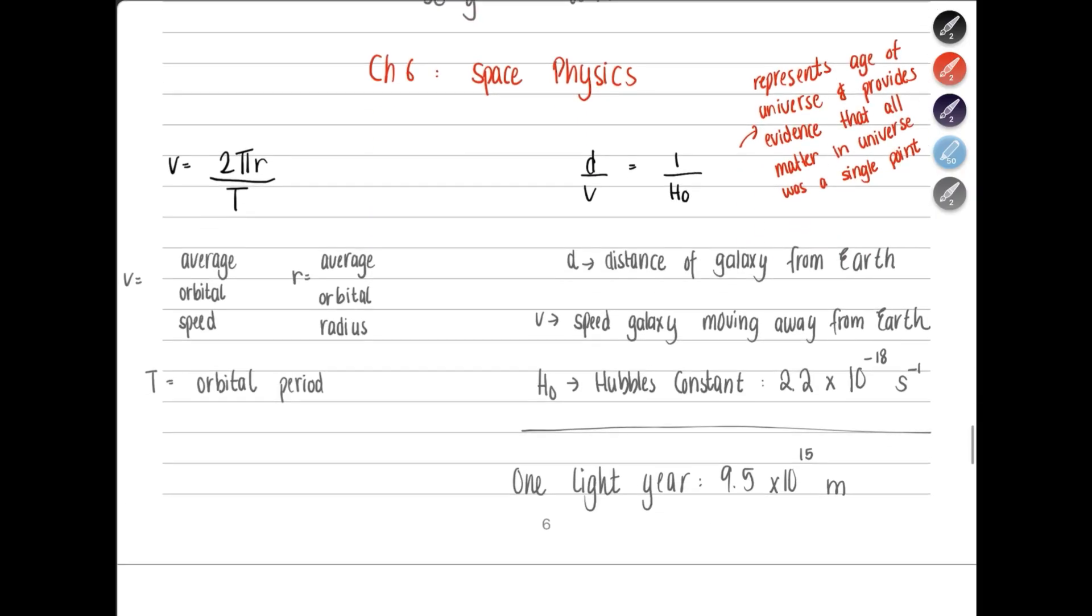Now, let's move on to space physics. These are two important formulas that you need to know. V is the average orbital speed. The speed to move around the entire orbit. The formula is 2 pi r. r is the average orbital radius. The radius of the orbit, divided by t, orbital period. The time taken to travel the entire orbit. V equals 2 pi r divided by t. On the other side, you have d by v equals 1 over h naught. What is d? d is the distance of the galaxy from Earth, from any galaxy that you're measuring from Earth. v is the speed at which the galaxy is moving away from Earth. And h naught is the Hubble's constant. The value for Hubble's constant is 2.2 times 10 power negative 18 per second.